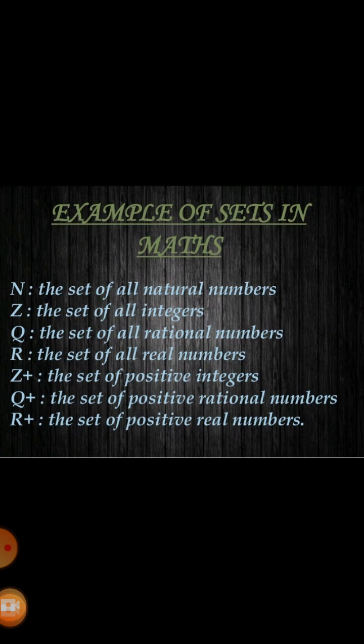Here we have some examples of sets in math. N denotes the set of all natural numbers. Z denotes the set of all integers. Q denotes the set of all rational numbers. R represents the set of all real numbers. Z+ is the set of positive integers, Q+ is the set of positive rational numbers, and R+ represents the set of positive real numbers.